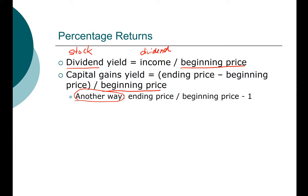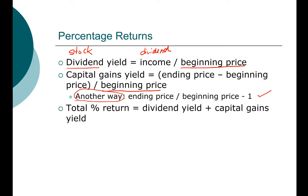In some cases it's easier to write a simple formula, but conceptually it's easier to understand that the capital gains yield is simply the amount that you gain divided by the beginning price. Your total return is the sum of the two components.